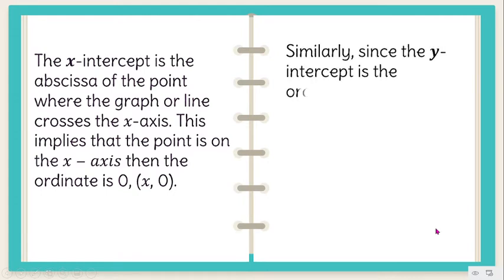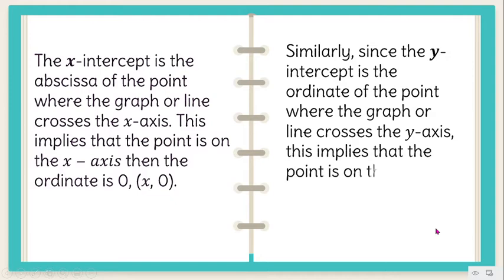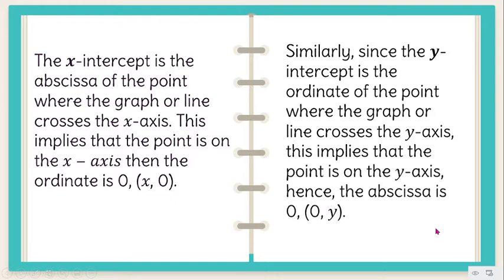Similarly, the Y intercept is the ordinate of the point where the graph or the line crosses the Y axis. This implies that the point is on the Y axis. Hence, the abscissa is 0, or the coordinates are (0, Y).